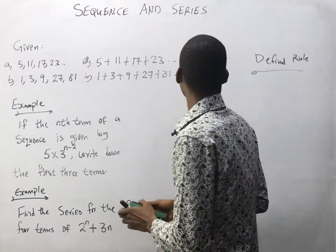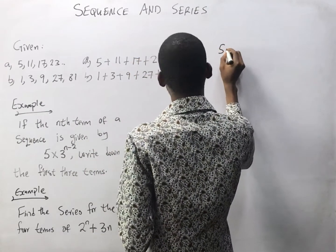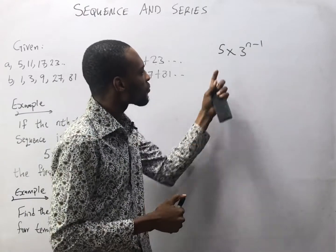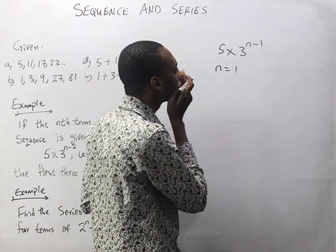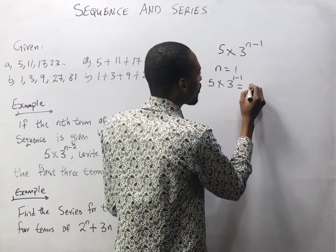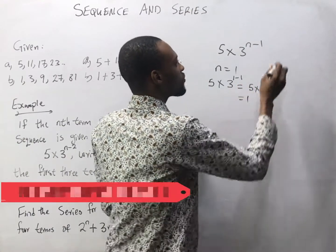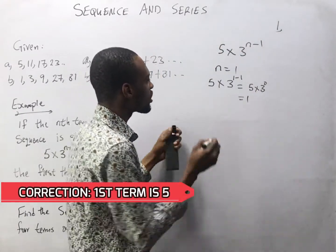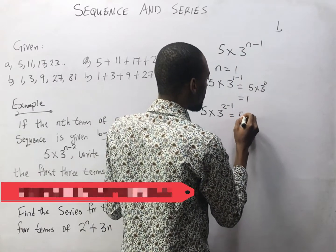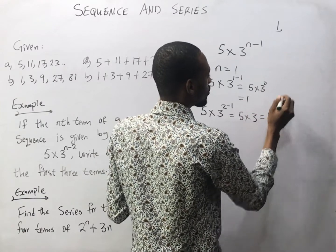Let's look at this example. If the nth term of a sequence is given by 5 times 3 raised to the power of n minus 1, write down the first three terms. For the first term, n equals 1: 5 times 3 to the power of 0 equals 5 times 1 equals 5. For the second term, n equals 2: 5 times 3 to the power of 1 equals 5 times 3 equals 15.